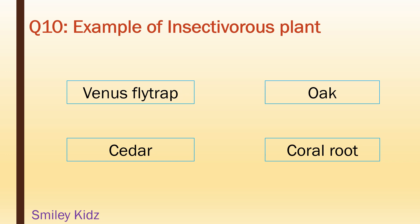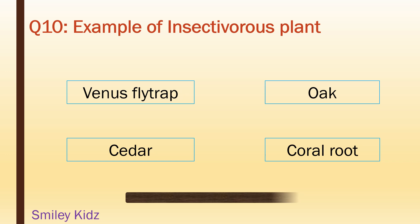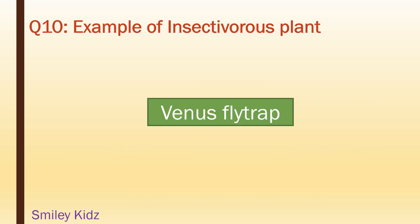Example of an insectivorous plant: venus flytrap, oak, cedar, coral root. Your time starts now. Your time is up. And the right answer is venus flytrap.